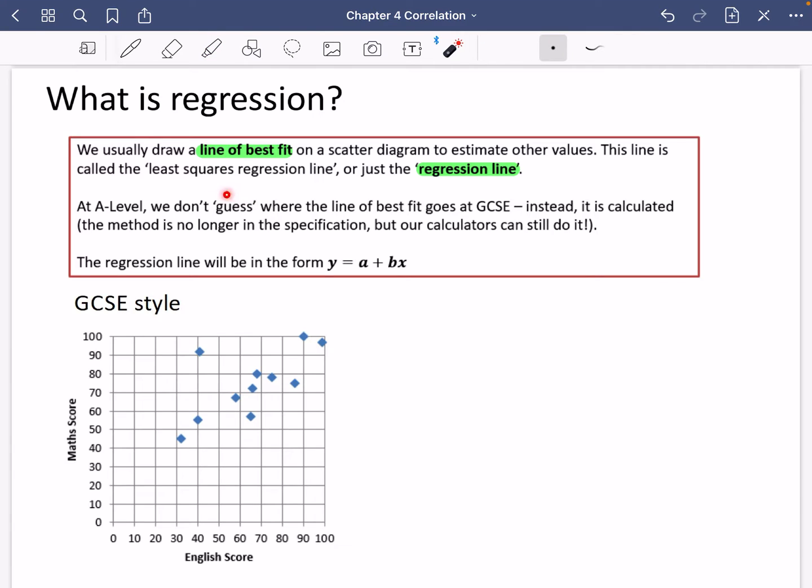But at A-level, we don't guess where the line of best fit goes like at GCSE. Remember in GCSE you used to draw it in such a way that it might have looked different to the person sat next to you. Instead, it is calculated and the method is no longer in the specification, but our calculators can still do it.